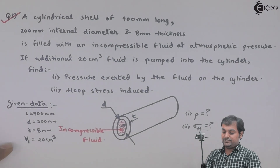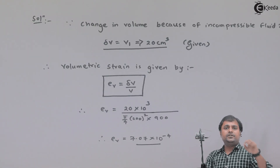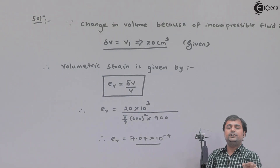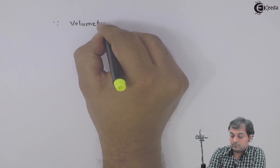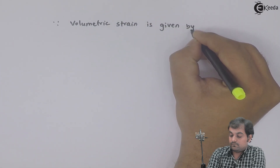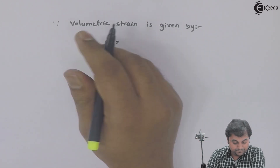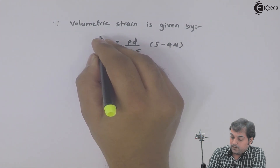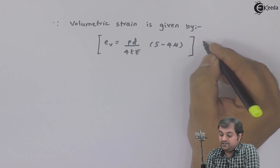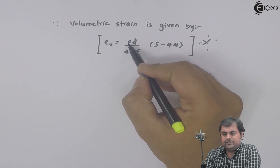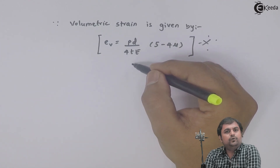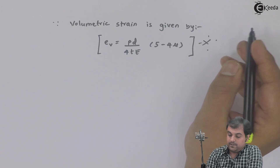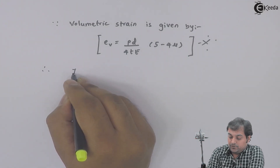Now for the first question — calculating internal pressure — we use an important empirical formula relating volumetric strain to internal pressure: e_V = PD / (4tE) × (5 − 4μ). This formula is very important for this problem.